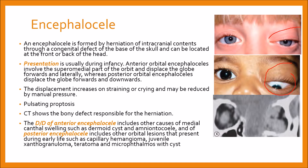The posterior orbital encephalocele is usually associated with neurofibromatosis type 1. The displacement increases on straining or crying and may be reduced by manual pressure. Pulsating proptosis may occur due to communication with the subarachnoid space, but because the communication is not vascular, there is neither a thrill nor a bruit. CT scan shows the bony defect responsible for the herniation. The differential diagnosis of anterior encephalocele includes orbital lesions filling the medial canthus such as dermoid cysts and amniotocele; posterior encephalocele differential includes capillary hemangioma, juvenile xanthogranuloma, teratoma, and microphthalmos with cyst.